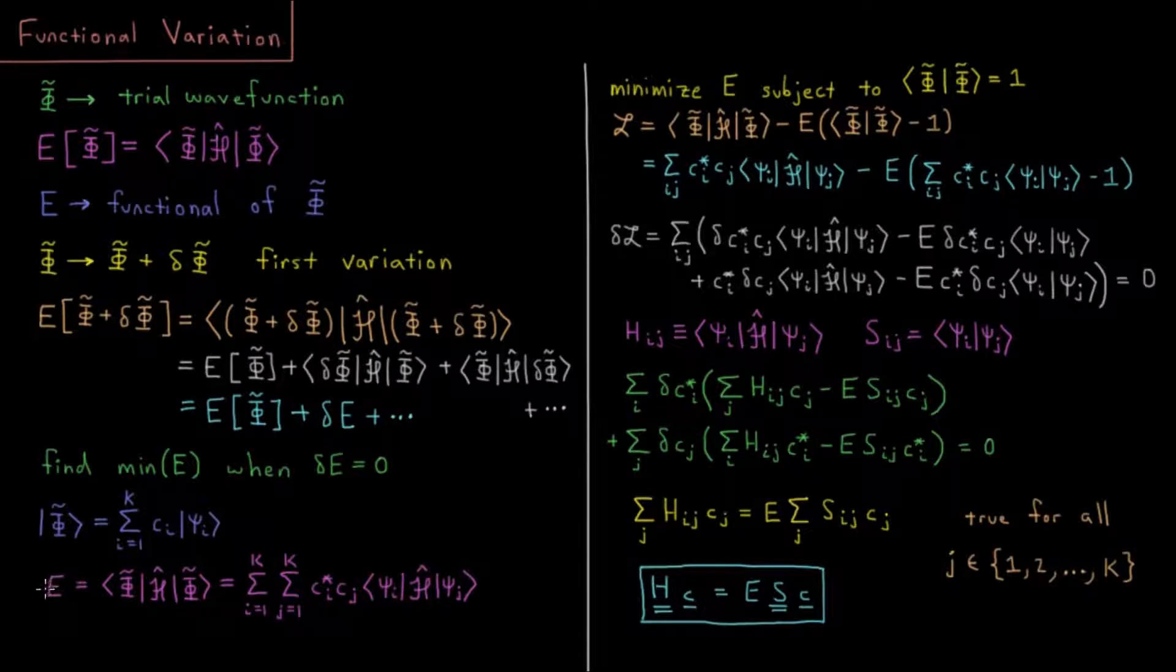Our energy is going to be the same expectation value integral as we've been seeing. When we substitute in this form for the wave function and similarly for the complex conjugate, we get a sum i equals one to k where we have on the bra side c_i star times psi_i star, and the ket side sum j equals one to k of c_j psi_j. Then we have to figure out what all the expectation value integrals are for basis function i interacting with the Hamiltonian operator acting on basis function j integrated over all space.